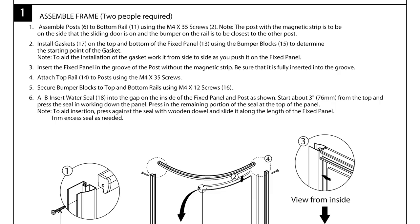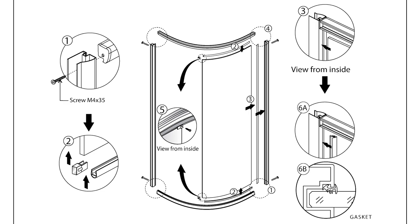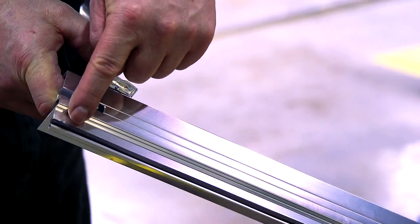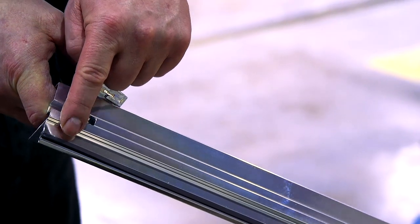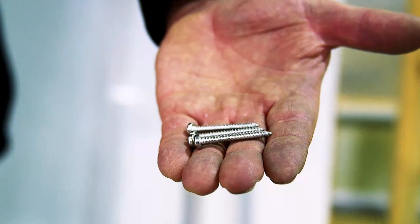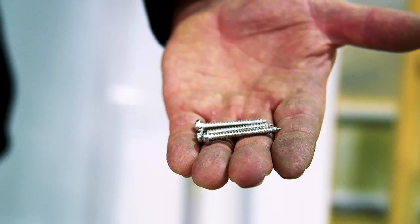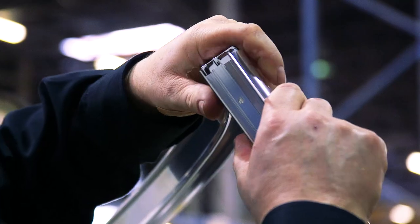The first step is to assemble the curved frame. Two people are required. The post with the magnetic strip is to be on the side that the sliding glass door is on. Using the M4 x 35 screws, assemble the two posts to the bottom horizontal rail.